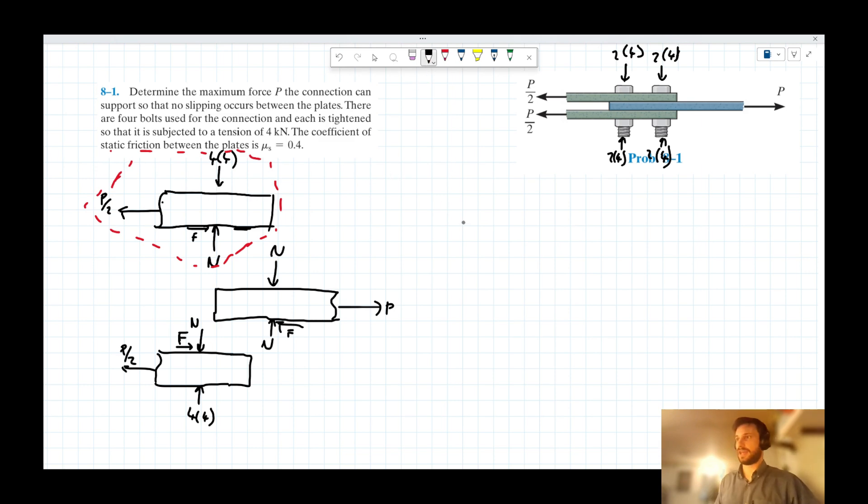we can say then that the forces in the x here are equal to zero. So we can therefore say that the things acting to the left are equal to the things acting to the right. P over 2, in this case, is equal to F.